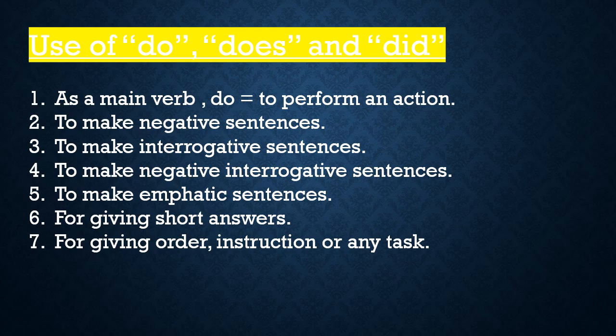First use is: do is used as a main verb. Do means to perform an action. Do ka arth hai karna. Karna shabd ka use mukhi kriya ke rup mein vakya mein hota hai. Second use is to make negative sentences.